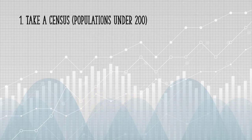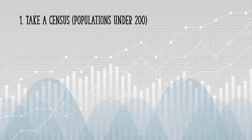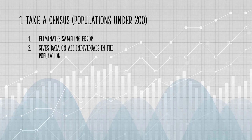If you have a small population, under about 200, a census is your best bet. A census is where you survey everyone in the population. Taking a census eliminates any sampling error, plus it gives you data on every individual in the population. Some costs are fixed, for example, your cost to develop a questionnaire design will be the same whether you have 10 or 100 people in your population.